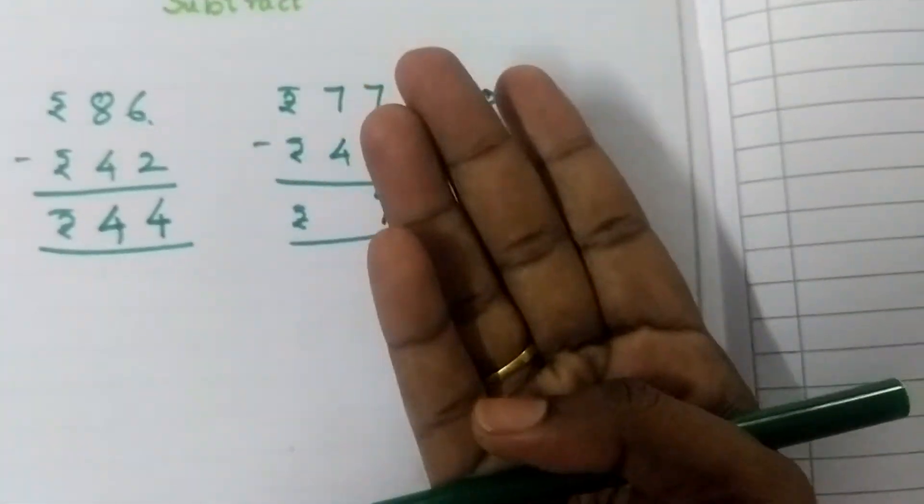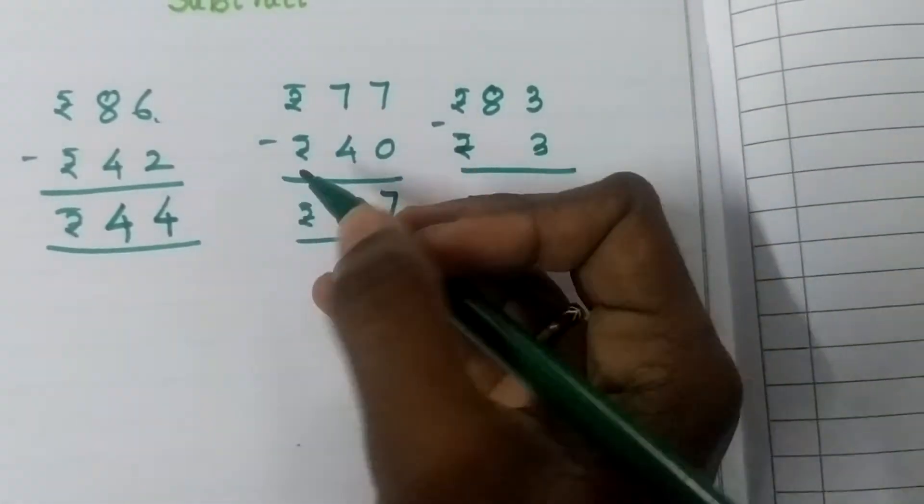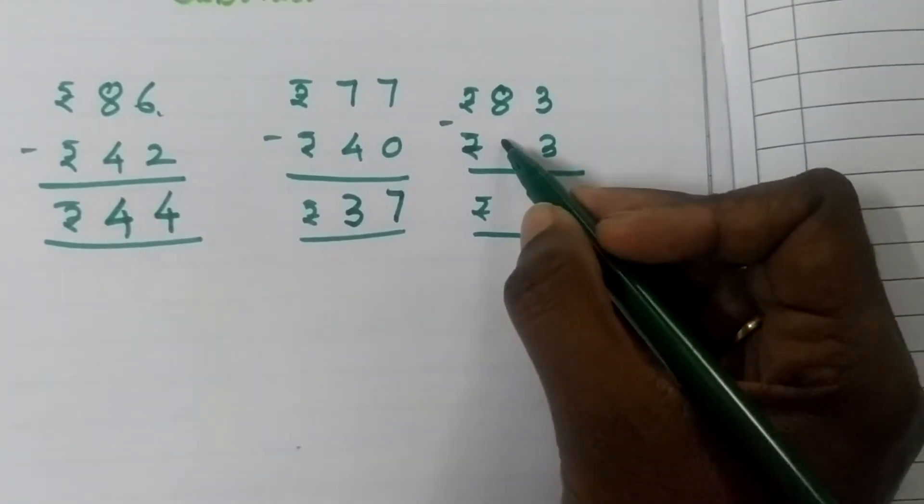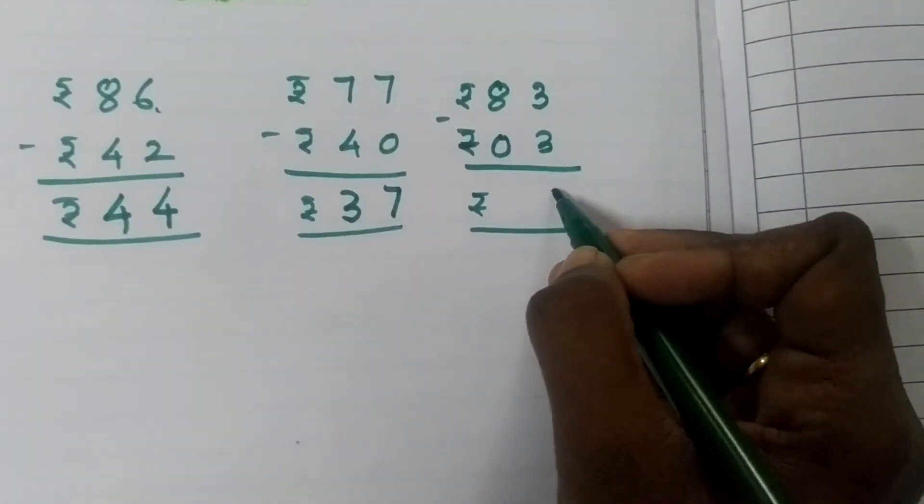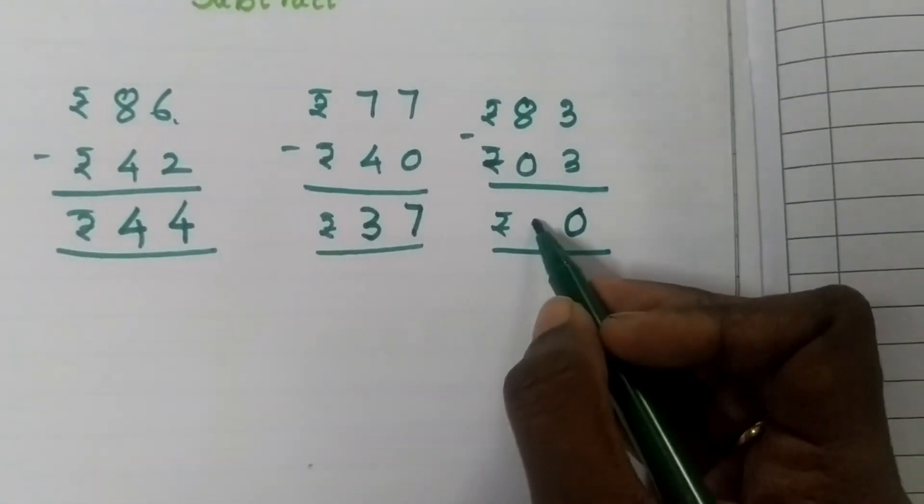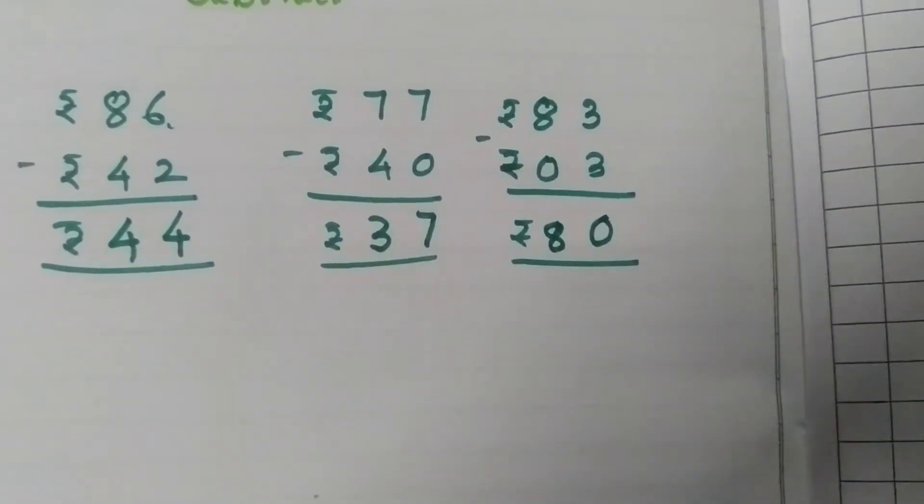Seven minus 4: 6, 5, 4, 3. So minus means before number. If there is no number, you have to fill it with zero. Three minus 3 is zero. Eight minus zero is 8. So the answer is 80. The rupee symbol must be there.